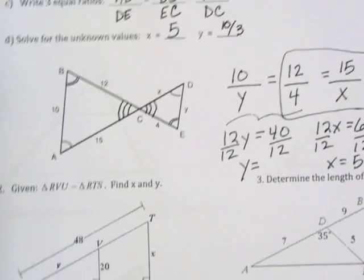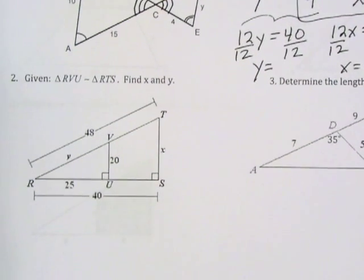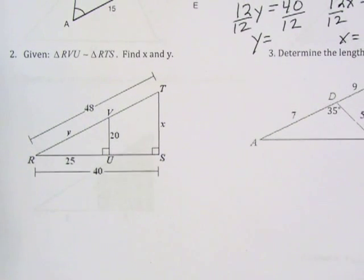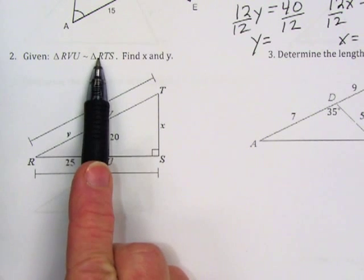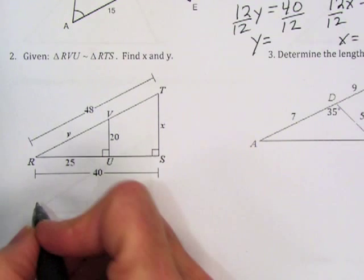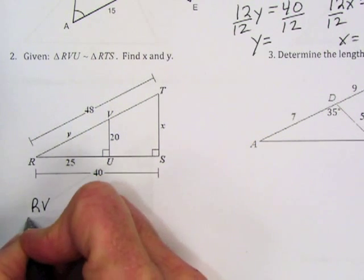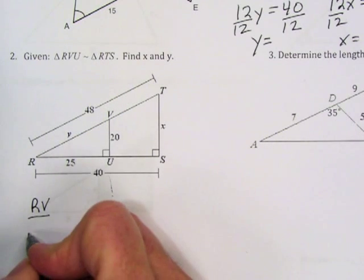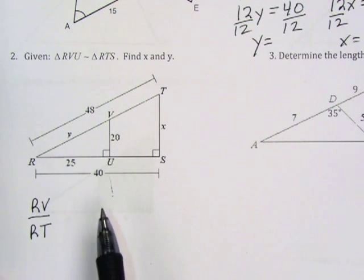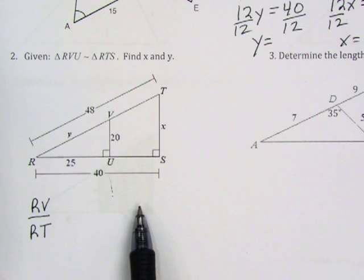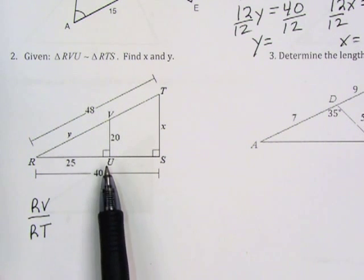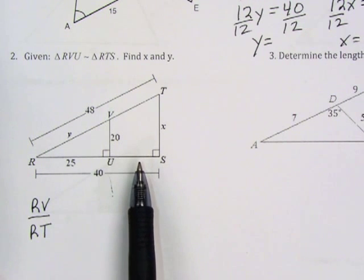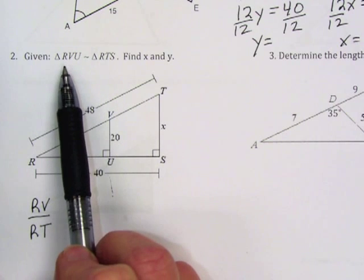Here is another type of similar triangle example where one triangle is embedded inside of the other triangle. Again, we have been given the similarity statement. Take the similarity statement and write your equal ratios. So segment RV corresponds to segment RT. Now, I am not looking at the triangles to build my equal ratios. I am strictly looking at the similarity statement. Sometimes if you look at the diagram, you may correspond the segments incorrectly, and therefore I encourage you to look at the similarity statement and match up the sides correctly.